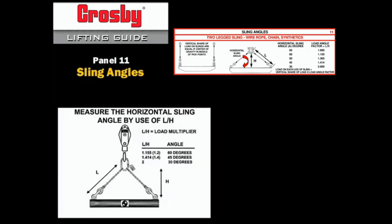If the sling length is 50 inches long, and the rigging triangle is 25 inches high, we can determine that length over height is equal to 2.0. We now know that the horizontal sling angle is 30 degrees.